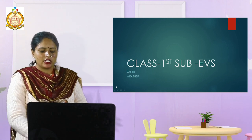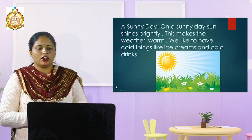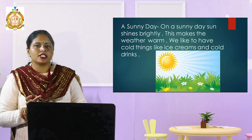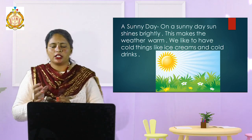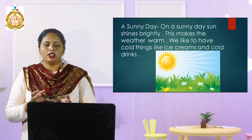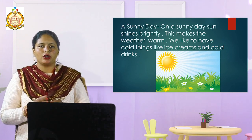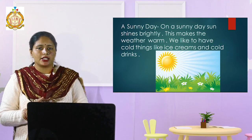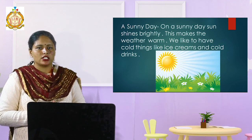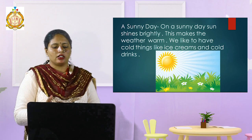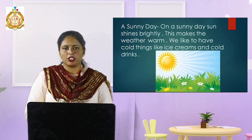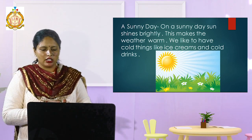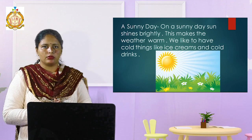The first type is a sunny day. On a sunny day the sun shines brightly, which makes the day warm. We like to have cold drinks and ice cream on that day. See in the picture — there is a bright sun shown.